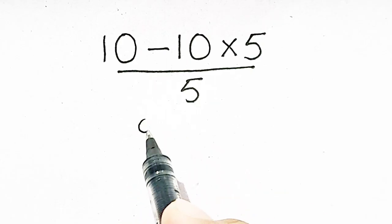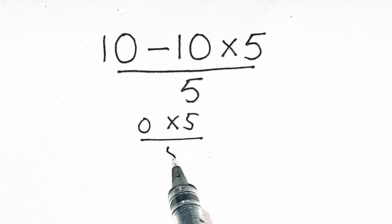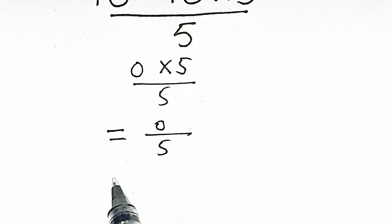10 minus 10 is 0. 0 times 5 divided by 5 is equal to 0 by 5, which is equal to 0, which is wrong.